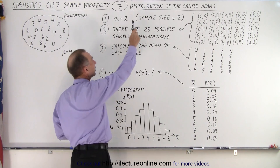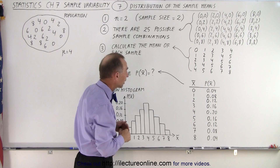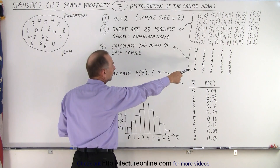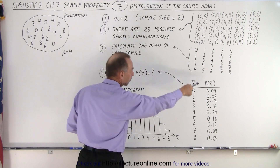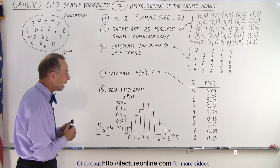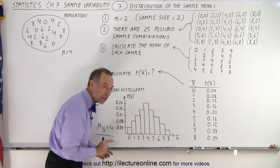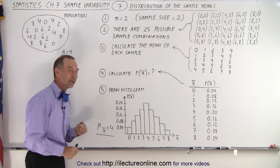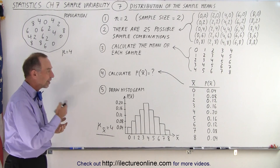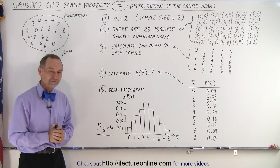So first of all we identify the sample size, identify the number of samples — in this case we're looking at all the possible samples we could draw from this population. We calculate the mean of each sample, then calculate the probability of having that particular mean. Then we draw a histogram of the probabilities of getting each of those means. It's a nice normal distribution and we can clearly see that the mean of the distribution of the means is equal to 4, which is the same as the mean of the population. That's one important piece of information we can get out of sampling from a total population.